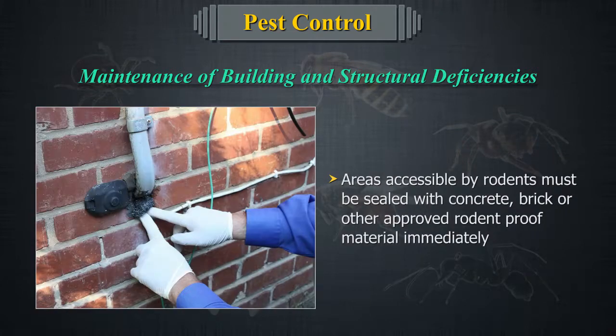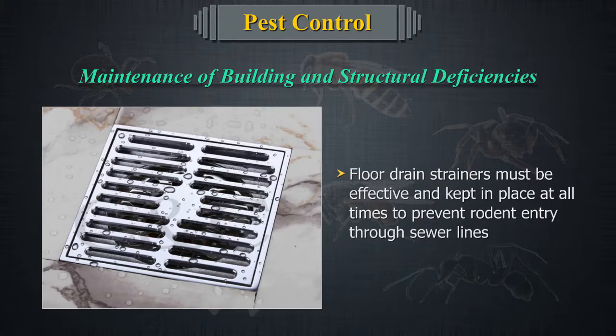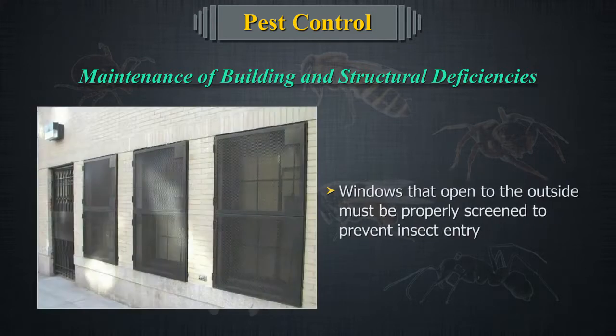Areas accessible by rodents must be sealed with concrete, brick, or other approved rodent-proof material immediately. Floor drain strainers must be effective and kept in place at all times to prevent rodent entry through sewer lines. Windows that open to the outside must be properly screened to prevent insect entry.